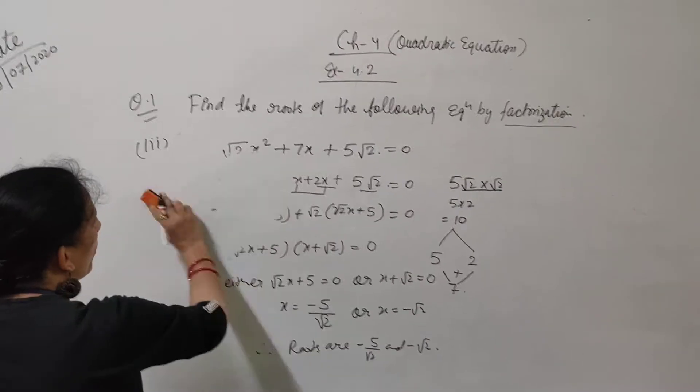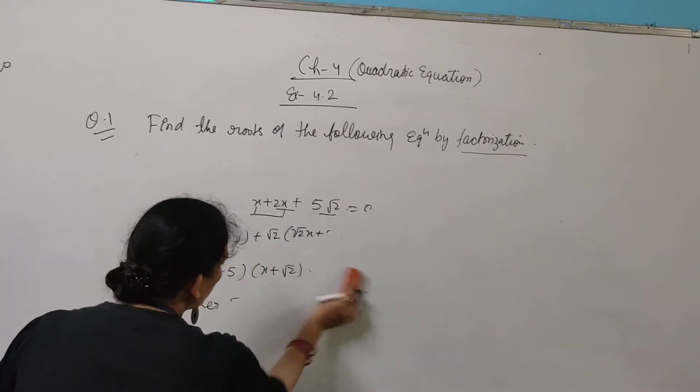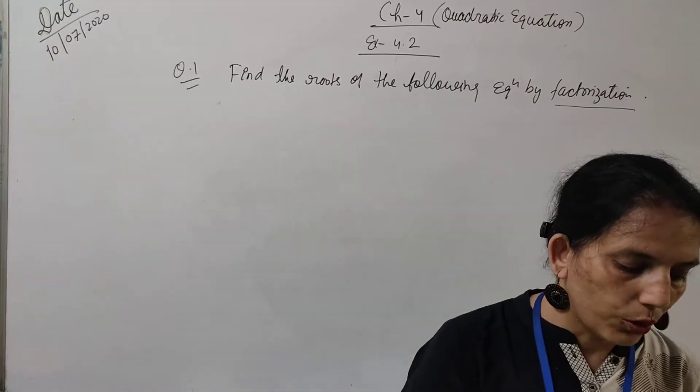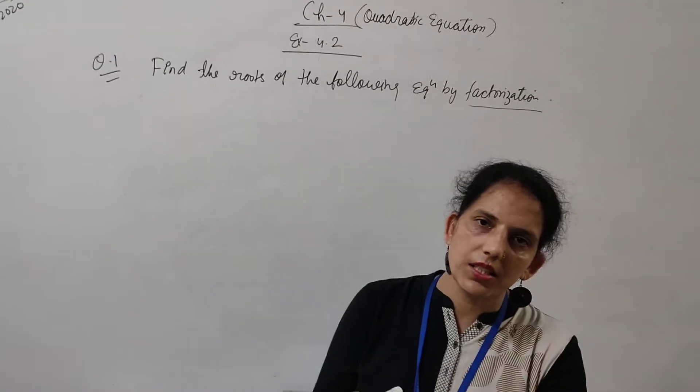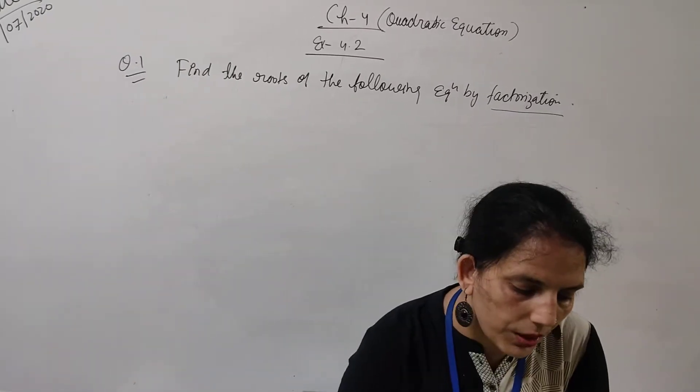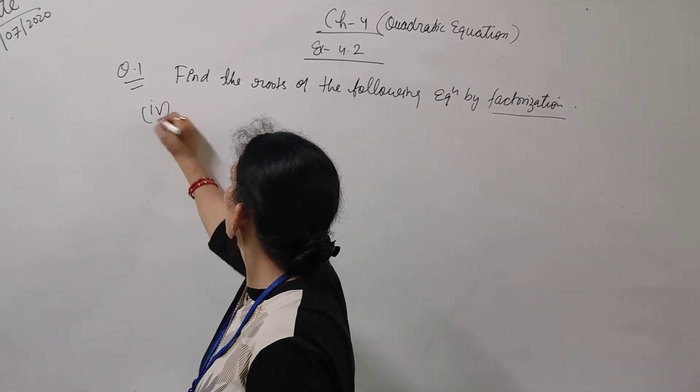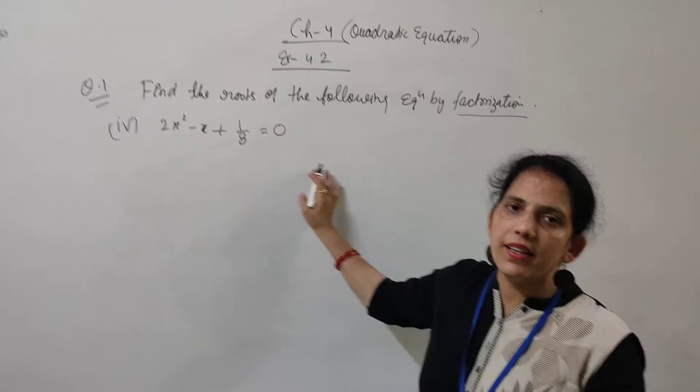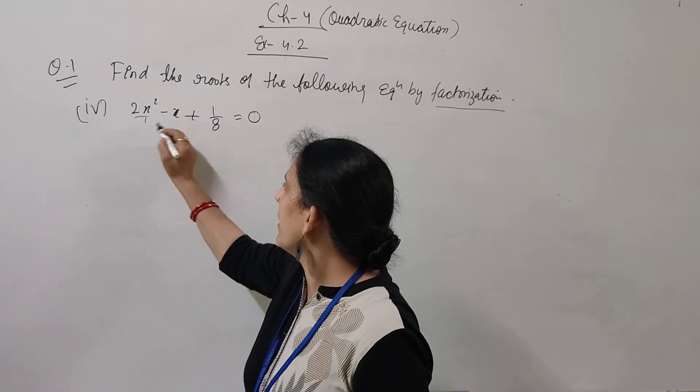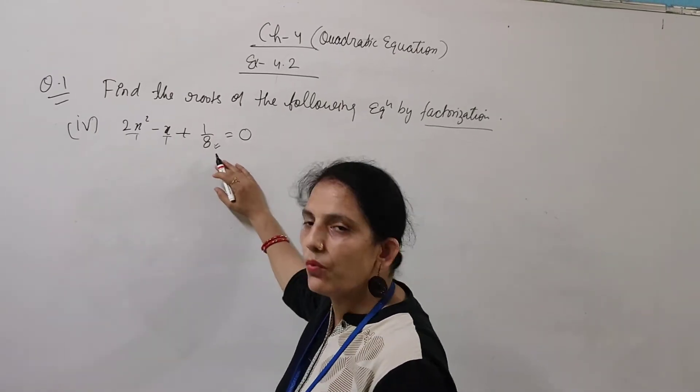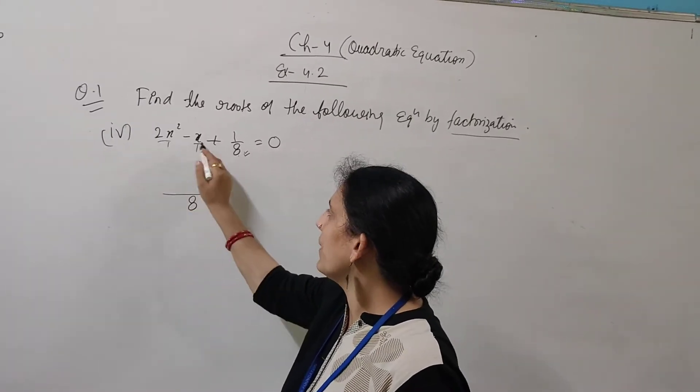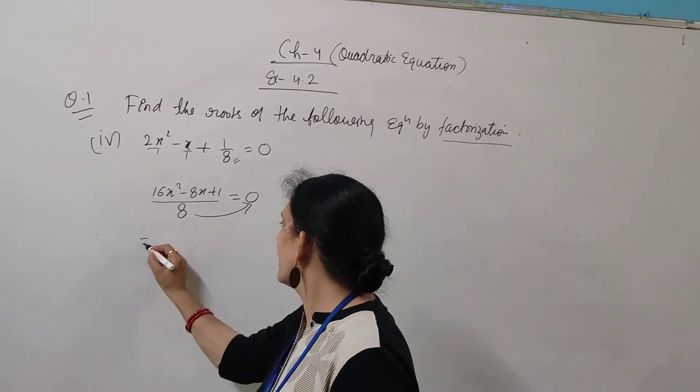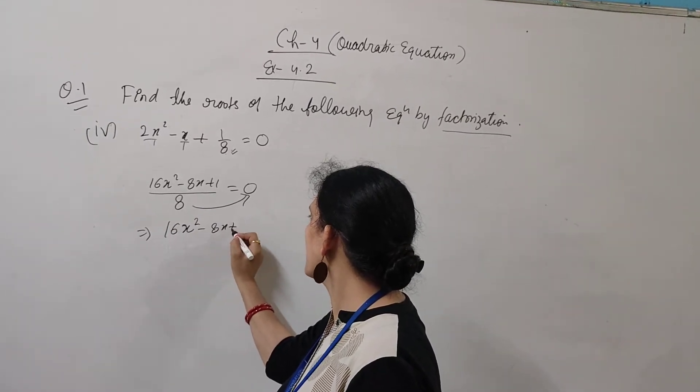Today I am not starting any new topic. The word problems have been deleted from your syllabus, so I am not taking word problems as well. One more question I am going to attempt - that is question part 4. Part 5 you can do. It is very easy. Therefore I am taking 4th part. 4th part is 2x² - x + 1/8 = 0. This question may have no difficulty. Only we have to take LCM. Here it is 8. So what will be the LCM of 1, 1, 8? 8 itself. So multiplying everything by 8, it will be 16x² - 8x + 1 is equal to 0.